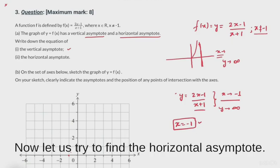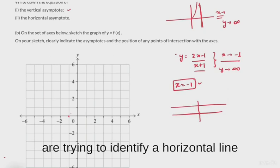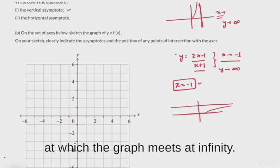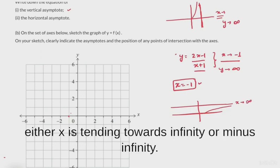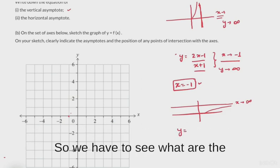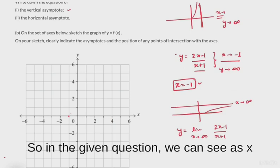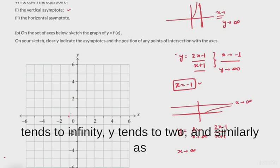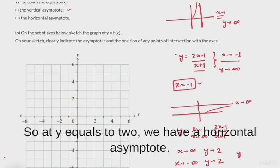Now let us find the horizontal asymptote. When we talk about horizontal asymptotes, we are identifying a horizontal line at which the graph meets at infinity. Either x is tending towards infinity or minus infinity. We can see that as x tends to infinity, y tends to 2, and similarly as x tends to minus infinity, y also tends to 2. So at y = 2 we have a horizontal asymptote.